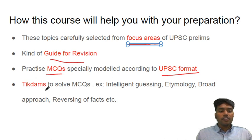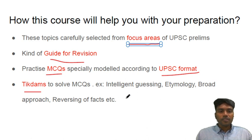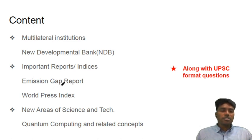The most important thing about this course is that we will provide the tick terms. UPSC has a strategy of preparing the options in a particular way, so we will be providing certain tick terms that might help you solve those. Today we will be seeing the multilateral institutions — that is the New Development Bank — and important reports and indices. Here we will deal with the Emission Gap Report, World Press Freedom Index, and new areas of science and technology, that is quantum computing, along with UPSC format questions.